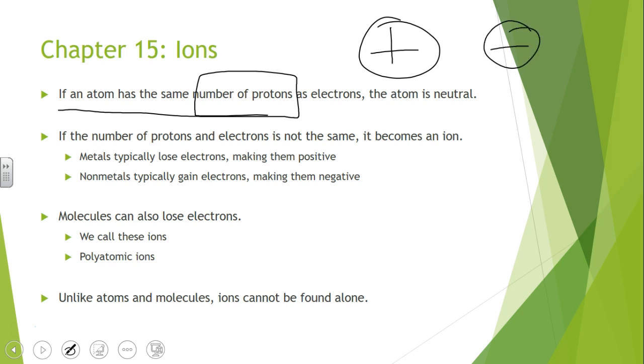Electrons and protons are attracted to each other, and so as long as you have the same number of positives and the same number of negatives, this is what we call a neutral atom. We don't have a charge. It's not an ion until we have different numbers of protons as we have electrons.